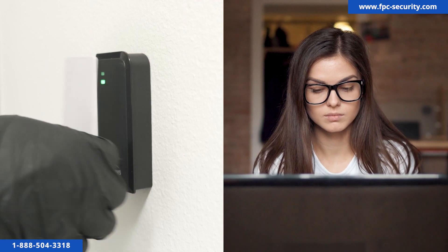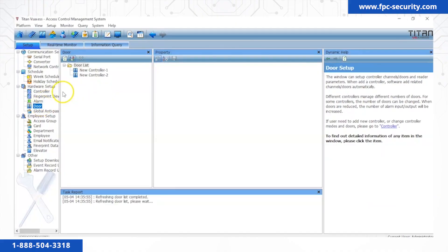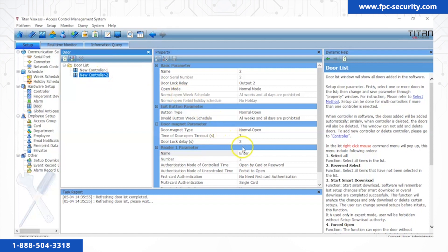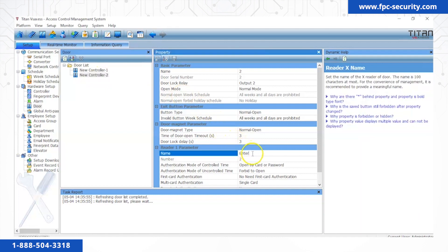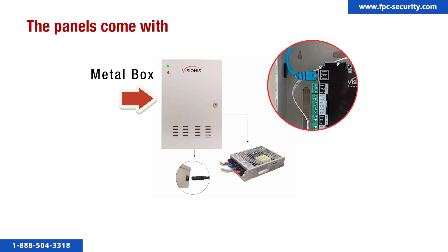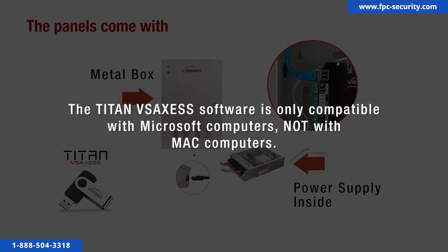You can restrict certain users for certain doors and open doors from the Titan VS Access desktop software. It also supports 26 to 34 bits Wiegand interface for accessing card readers and is seamlessly compatible with third-party card readers. The panels come with a metal box, a wired network LAN connection, a 12V 8.5 amp power supply, and a Titan VS Access software USB. The Titan VS Access software is only compatible with Microsoft computers, not with Mac computers.